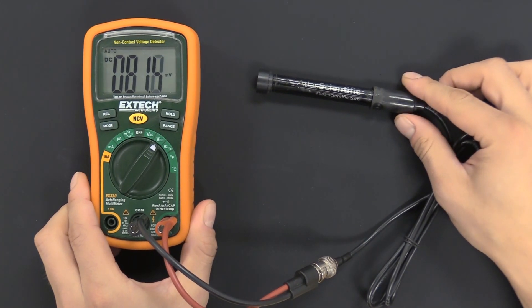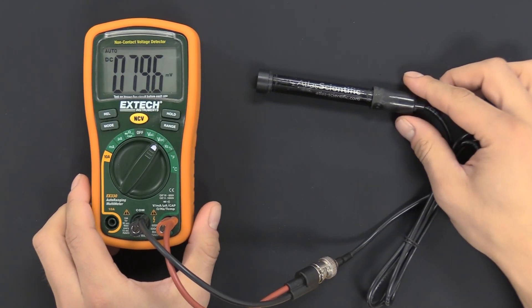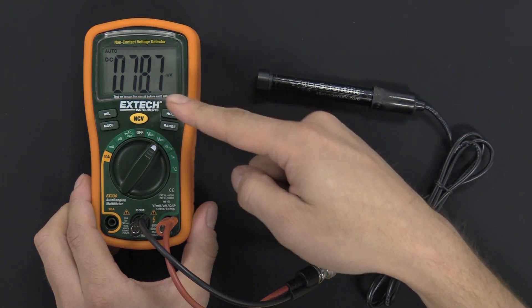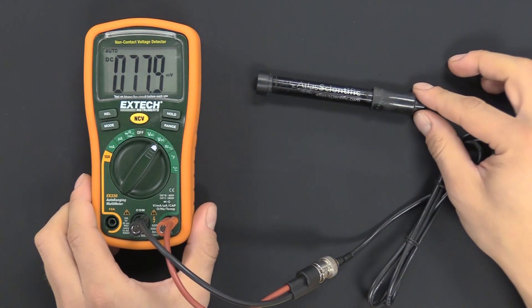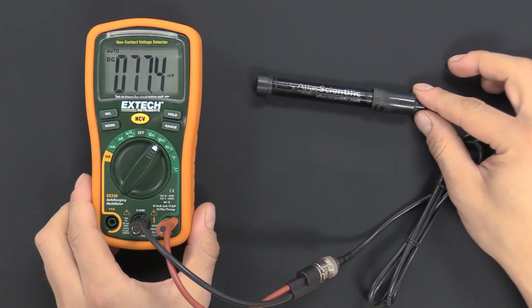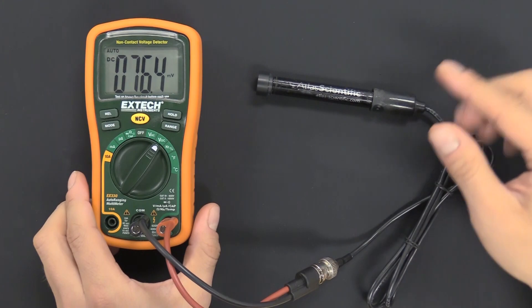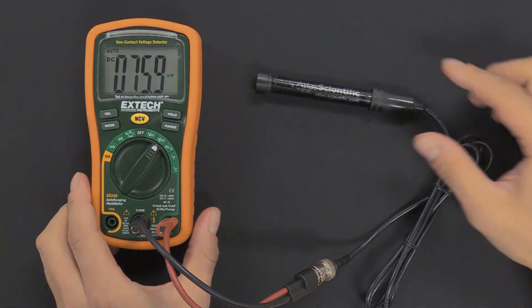This is what happens when you recondition a probe. The readings are going to read very high and they're going to drop down. It should stabilize at around between 45 and 55 millivolts. No two DO probes are the same.